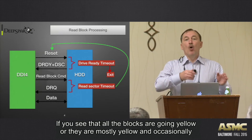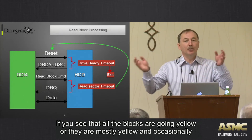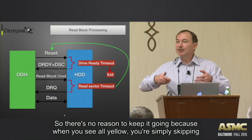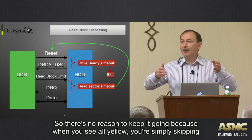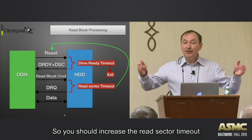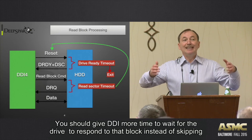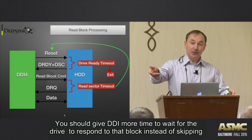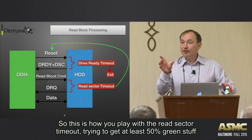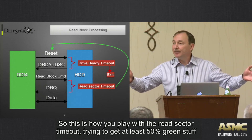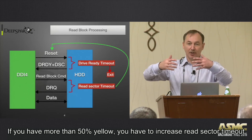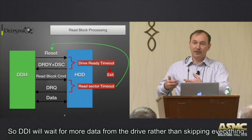If you see all blocks going yellow — yellow, yellow, yellow, with only occasionally one green — it means you are dropping every single block. There's no reason to keep it going, because you're simply skipping everything. What you should do is increase the read sector timeout, giving DDI more time to wait for the drive to respond rather than skipping with no purpose. The rule of thumb: if you have more than 50% yellow blocks, you need to increase the read sector timeout.